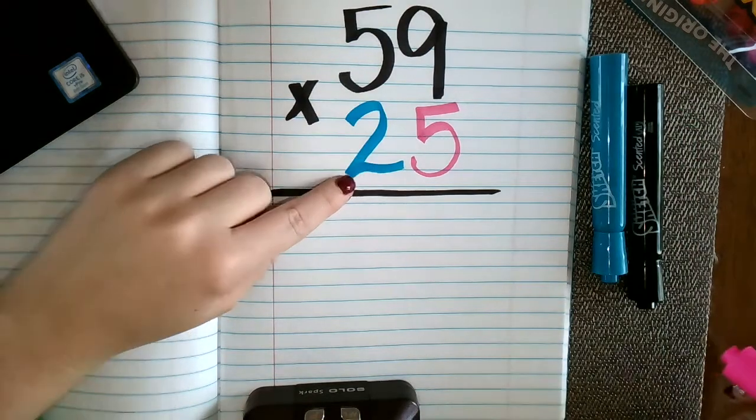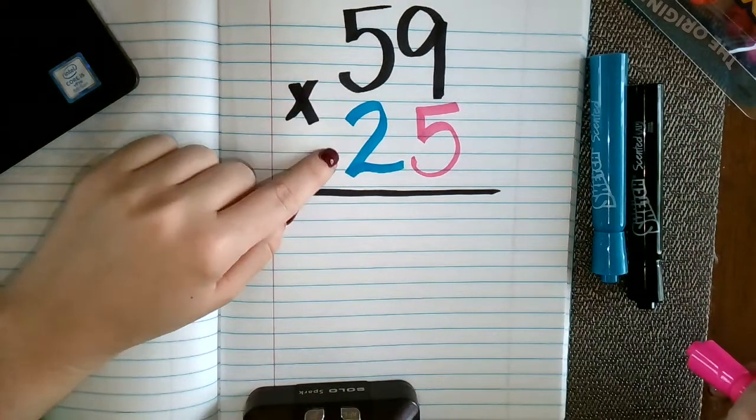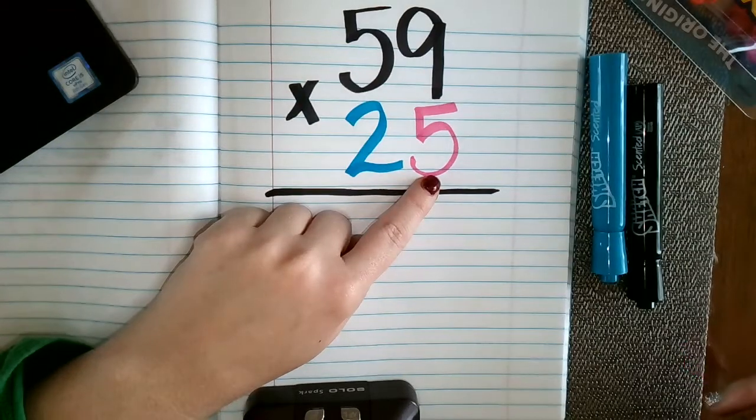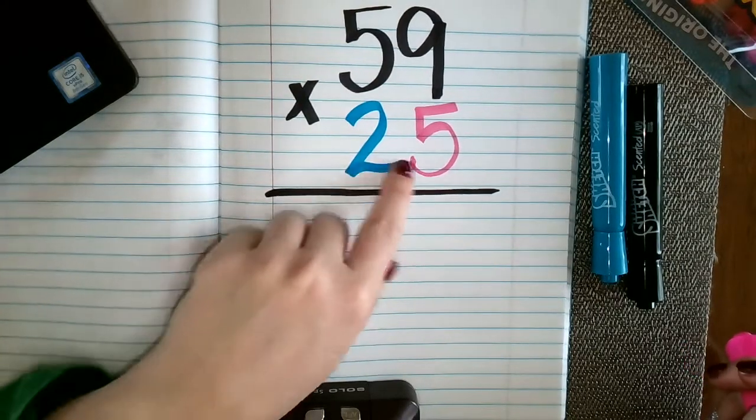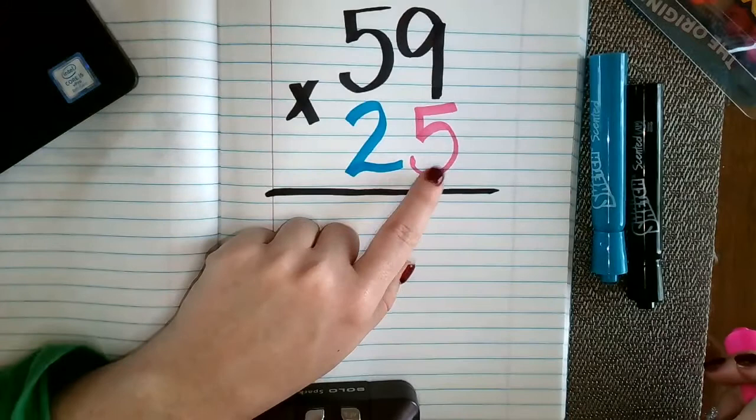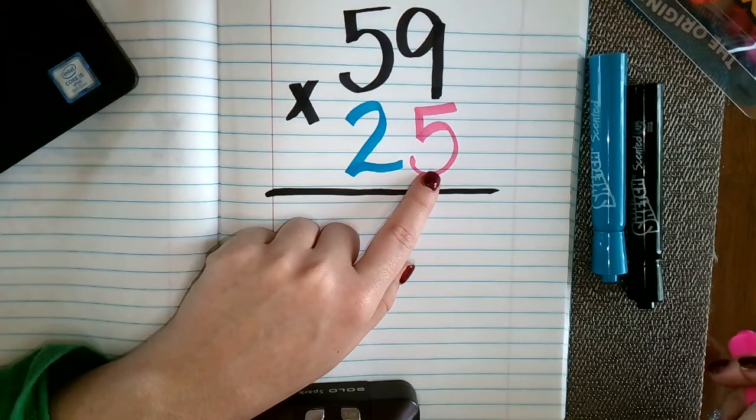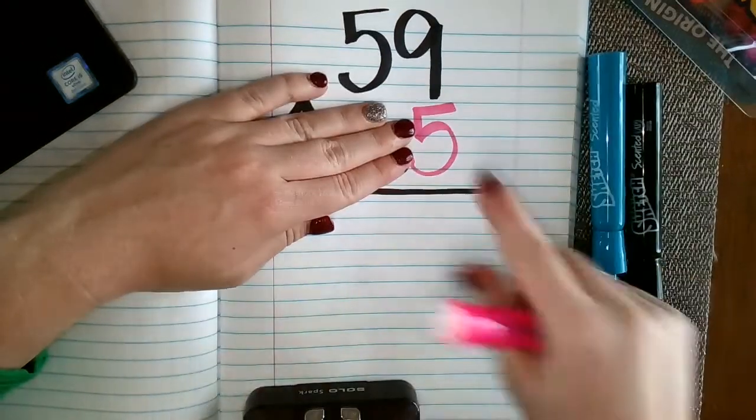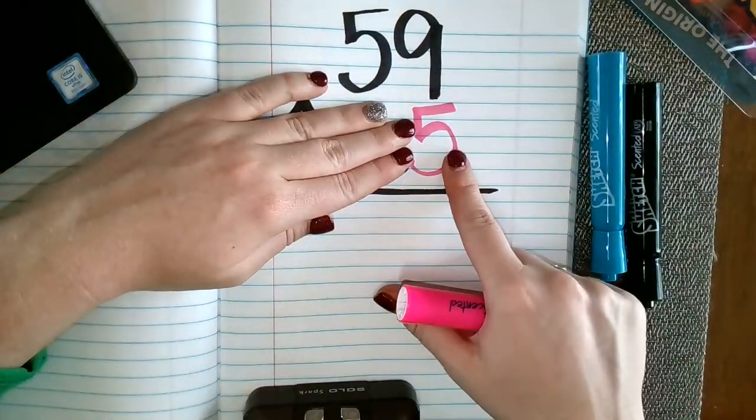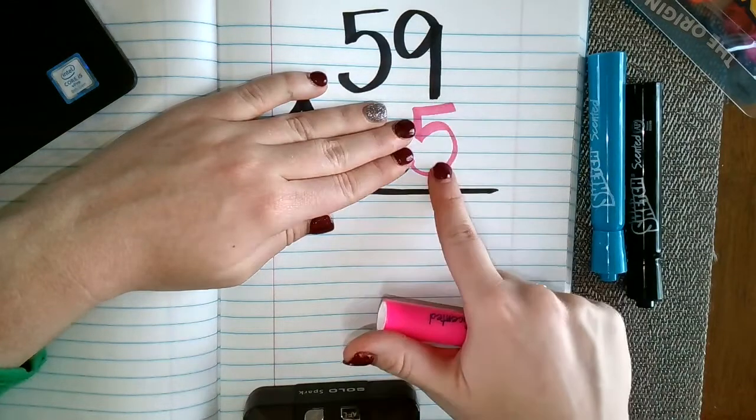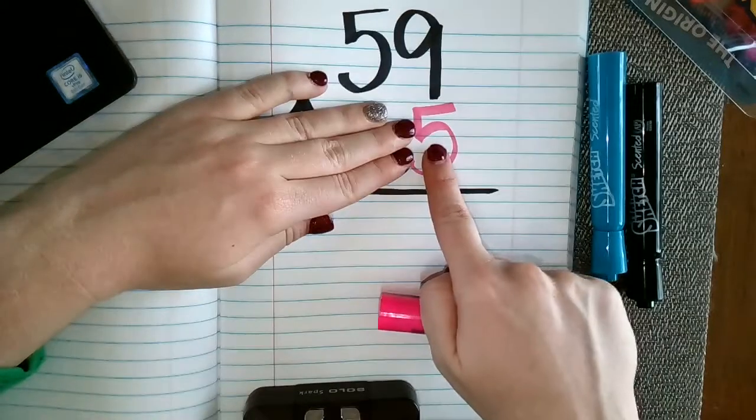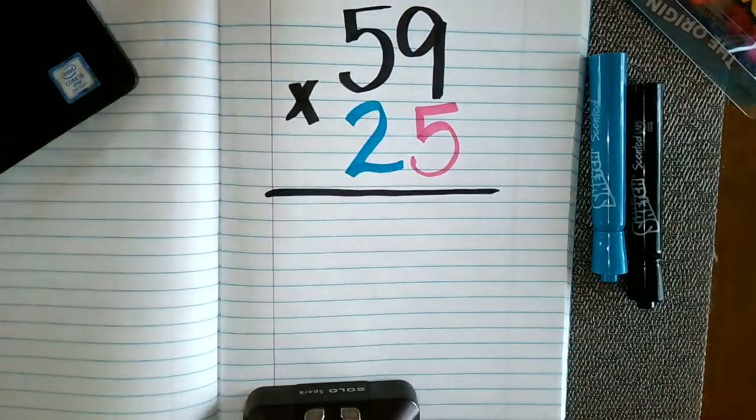So I am going to start when I first start multiplying with standard algorithm. I'm going to start in the smallest place value of my bottom number. So 25 is my bottom number and my smallest place value is the 5, which is in the ones place. So in other words, I'm going to look at this as 59 times 5. What is 59 five times?